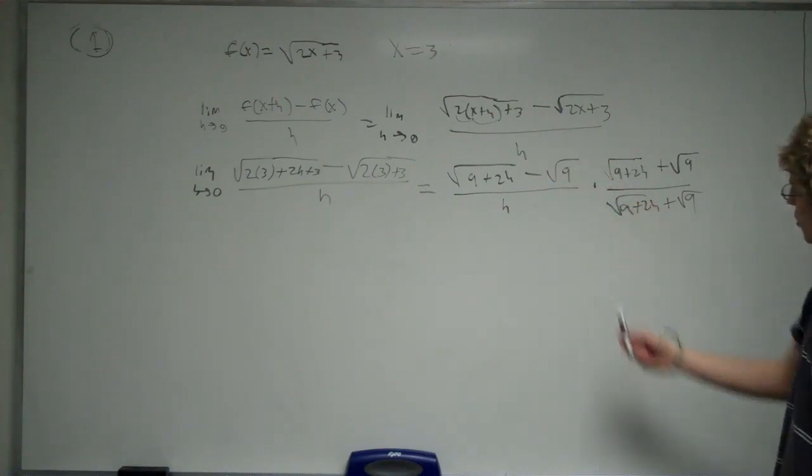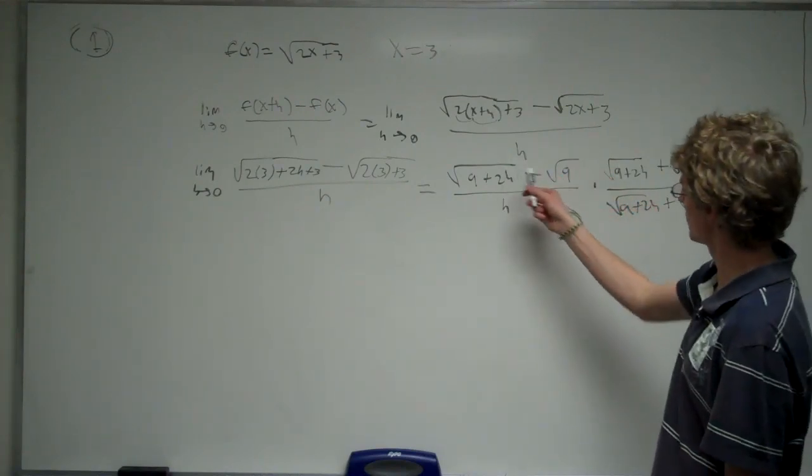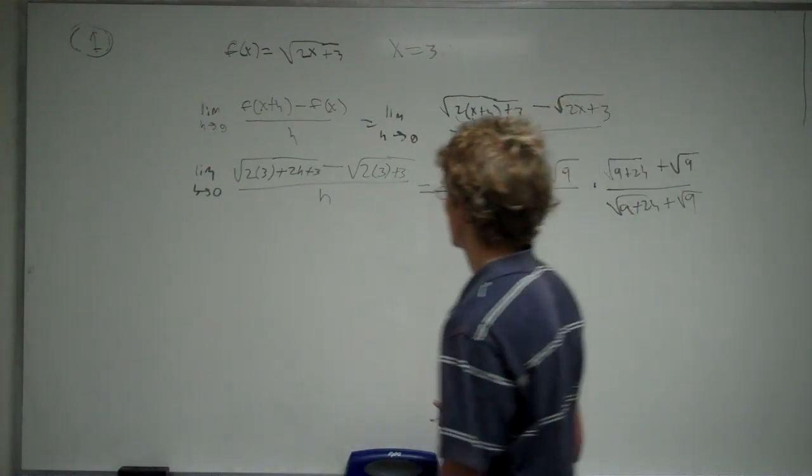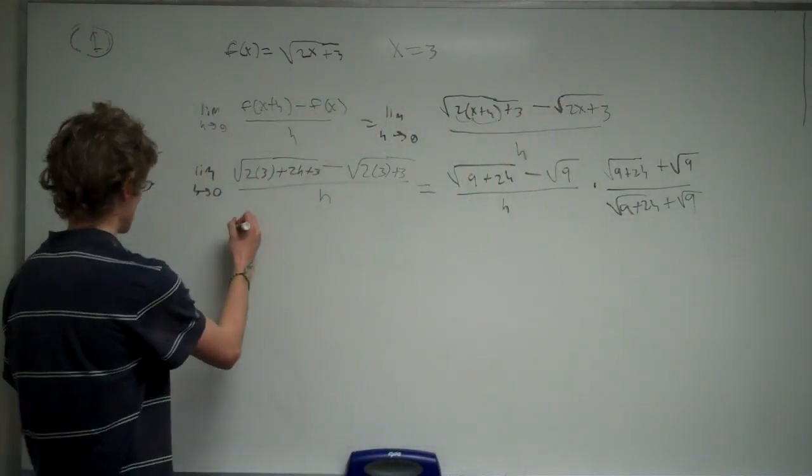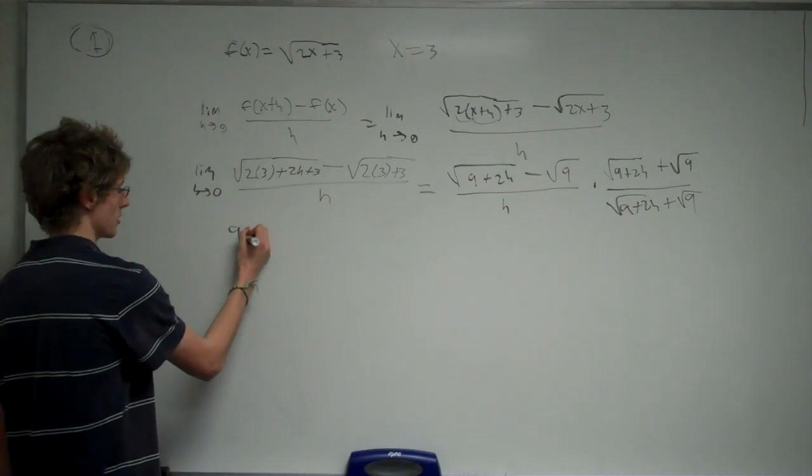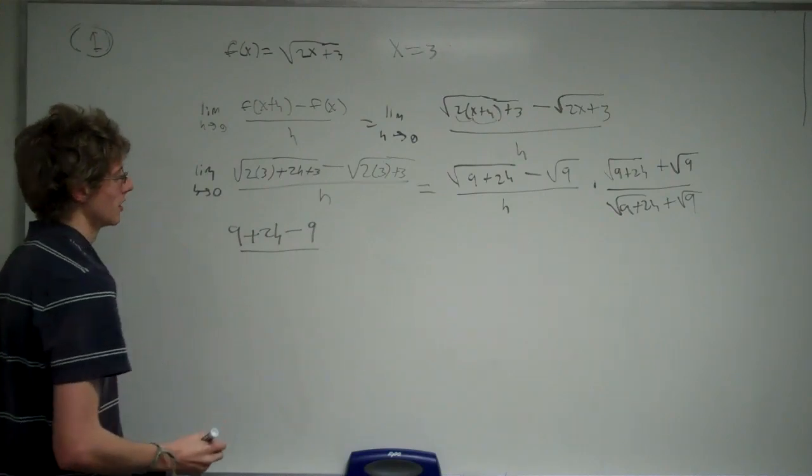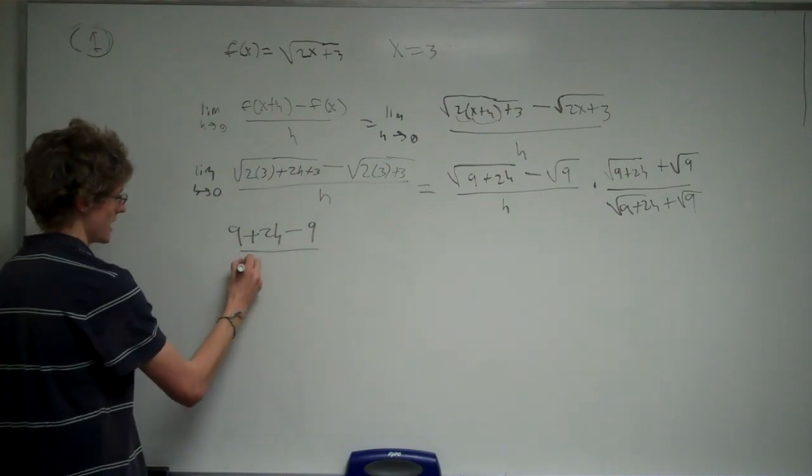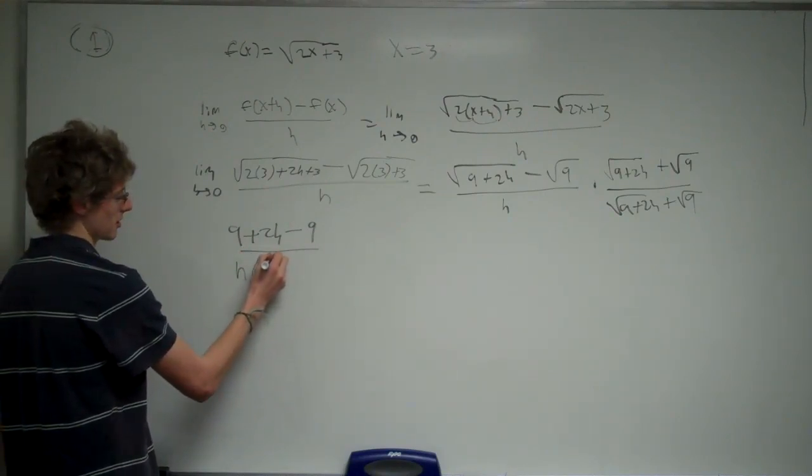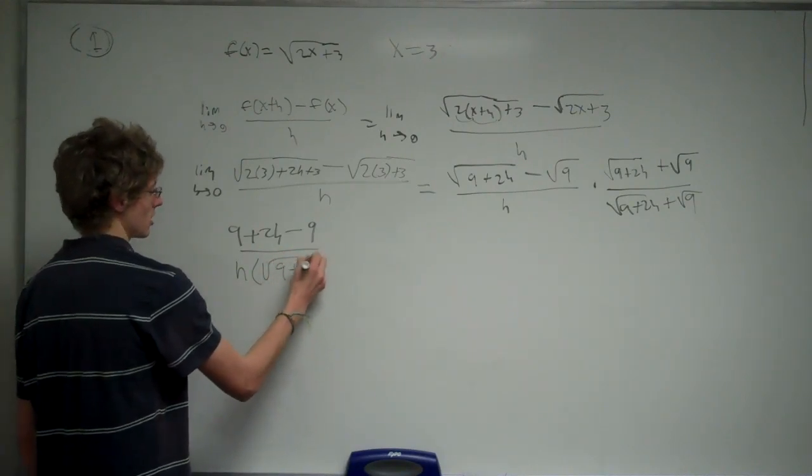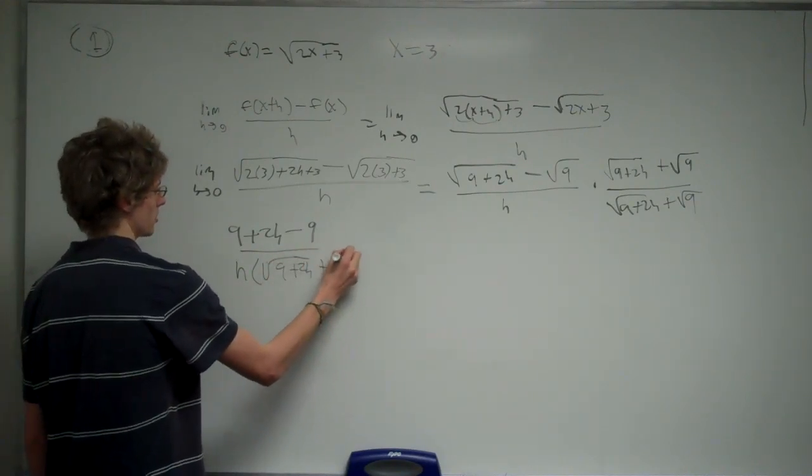So when we multiply by the conjugate, it's going to get rid of these square roots, or the numerator here. We're going to be left with 9 plus 2h minus 9 all over h times the square root of 9 plus 2h plus square root of 9.